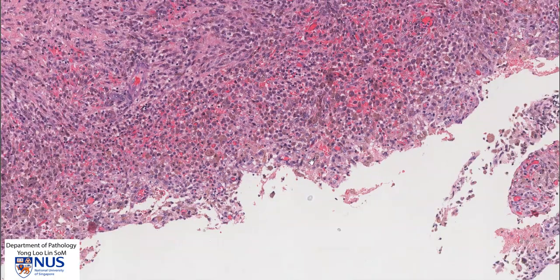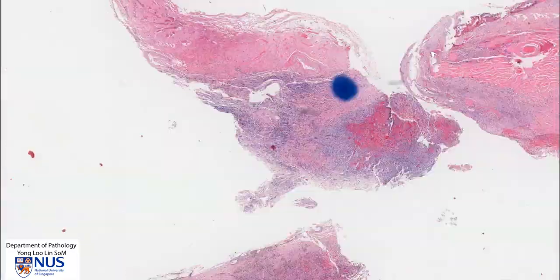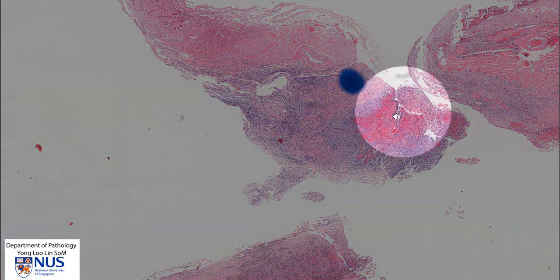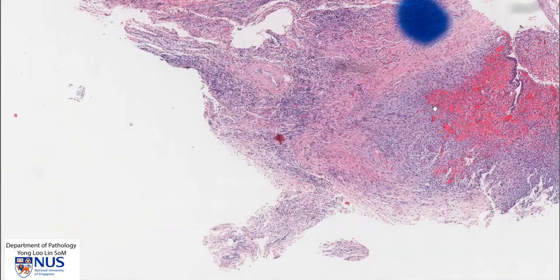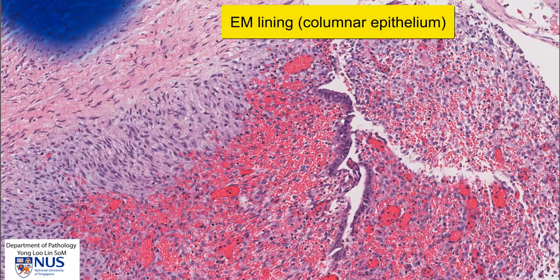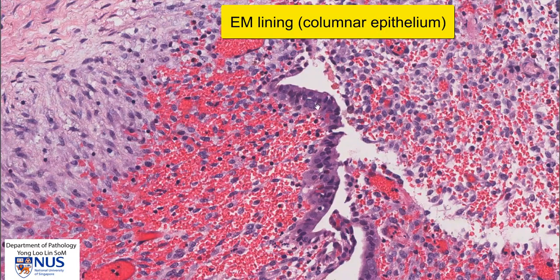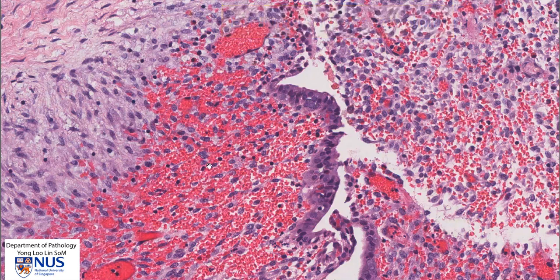Let's look for an area with some residual epithelium. There is a focus here — if you can see this very thin blue strip, this is some residual endometrial epithelium that is lining the cyst wall. As we go to higher magnification, we can see that these are columnar cells, and below this is endometrial stroma. So in endometriosis, we get both endometrial epithelium and the underlying stroma found in the ovary.